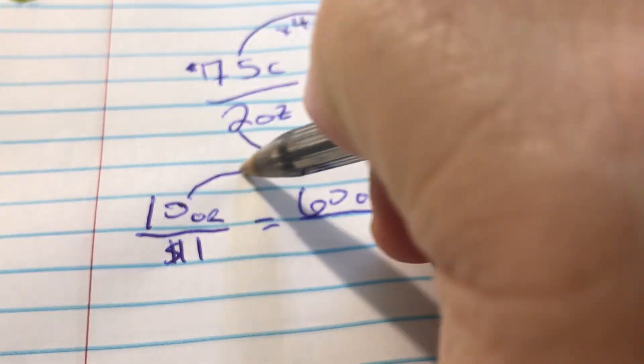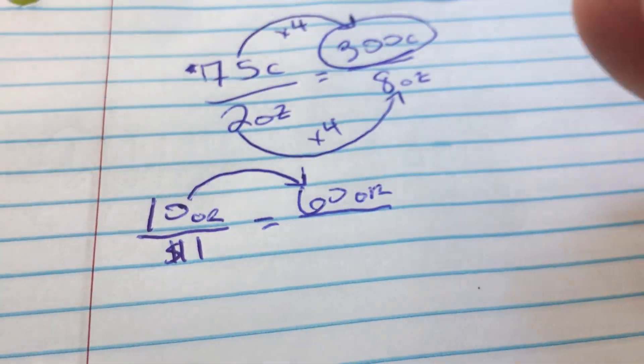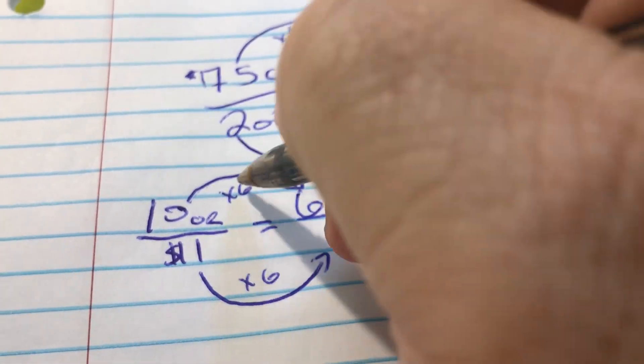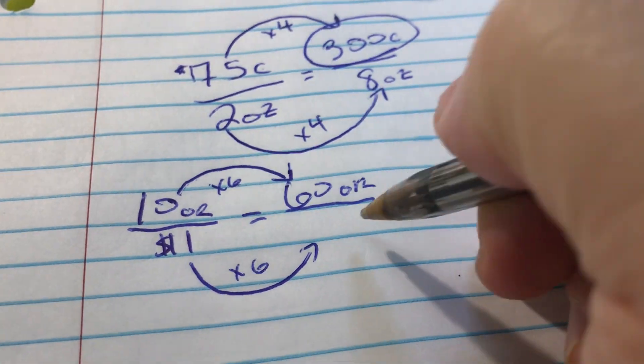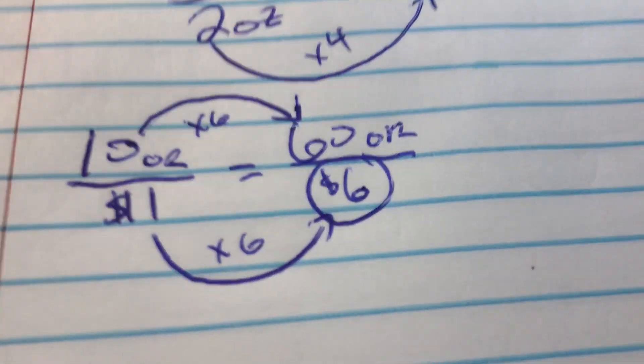And now, to get from 10 to 60, we have to multiply by 6. So we're going to do the same thing on the bottom right here. When you multiply 1 times 6, it comes out to be 6. So our answer is $6.